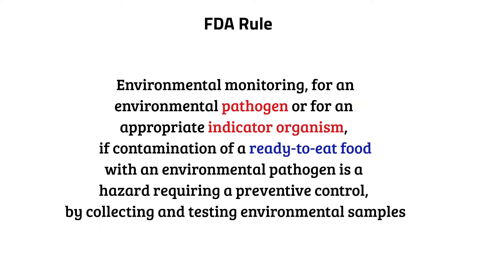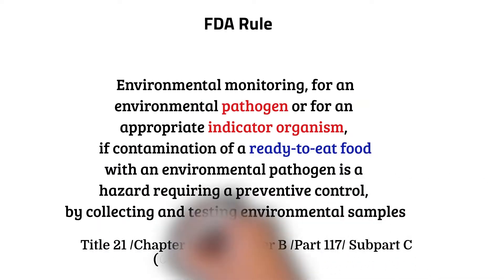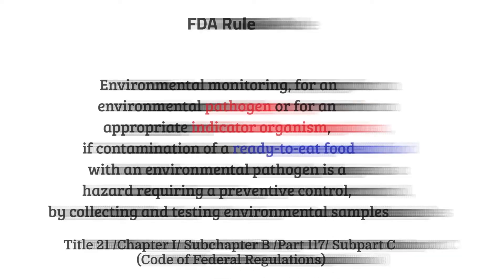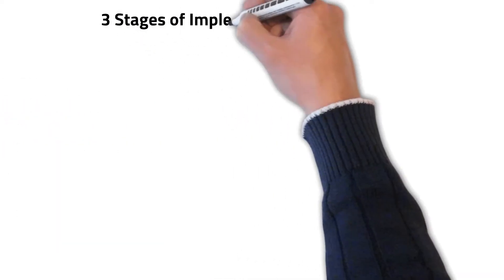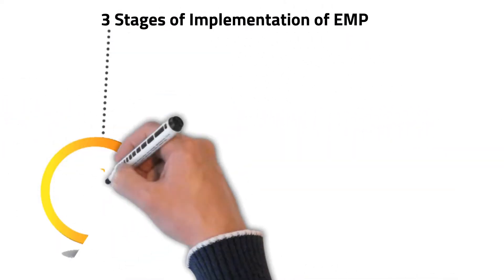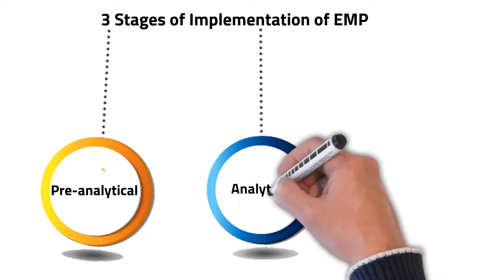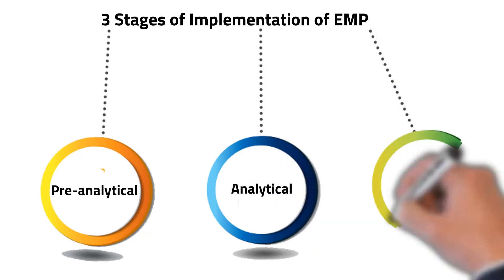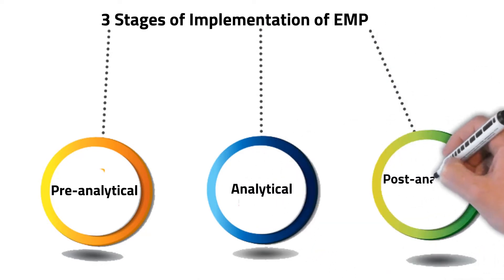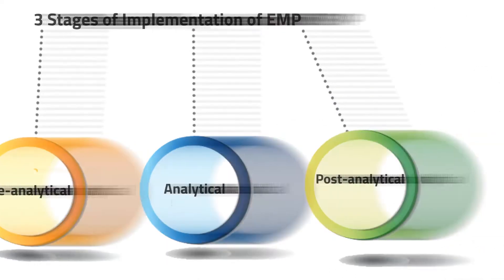As a result of recontamination, the FDA implemented rules emphasizing the importance of the industrial environmental monitoring program system. It can be initiated with just three simple steps as shown: pre-analysis, analysis, and post-analysis stages.